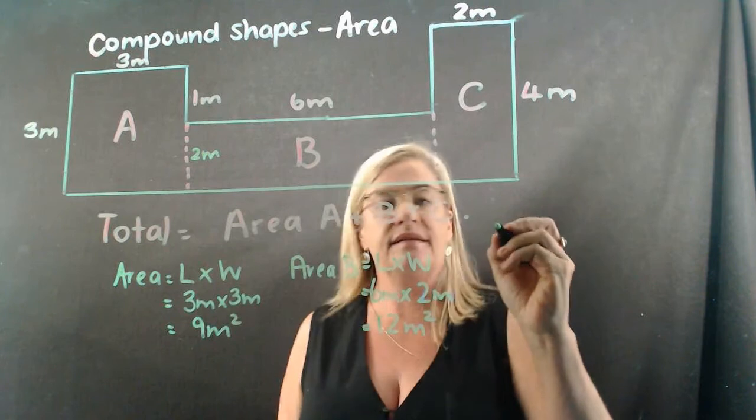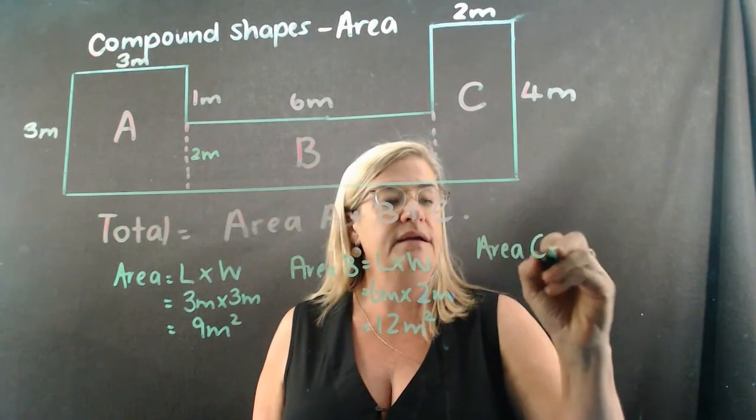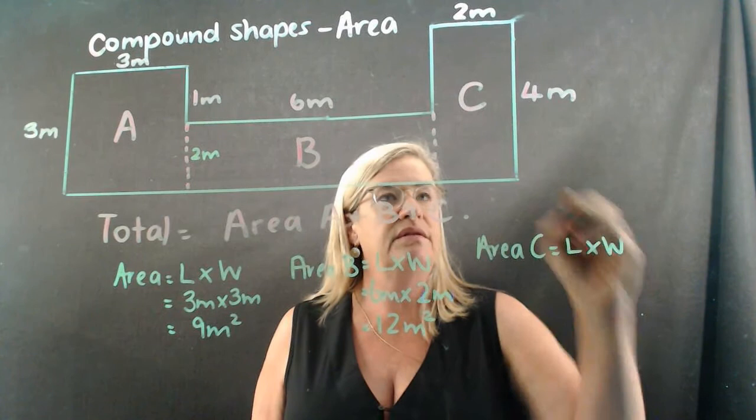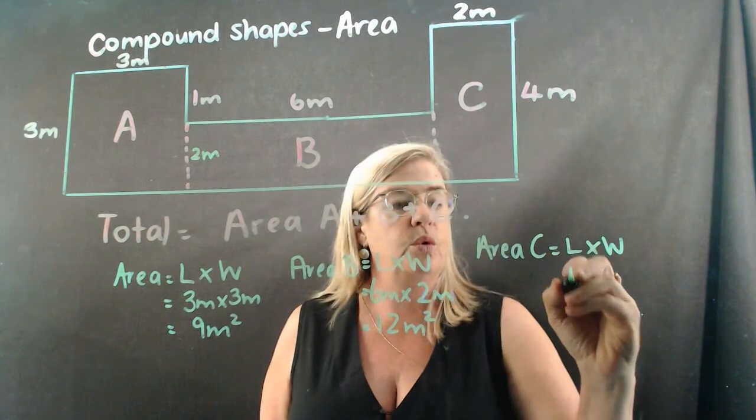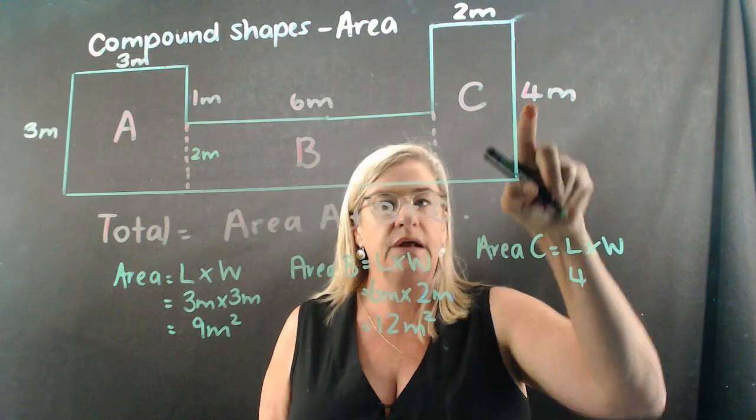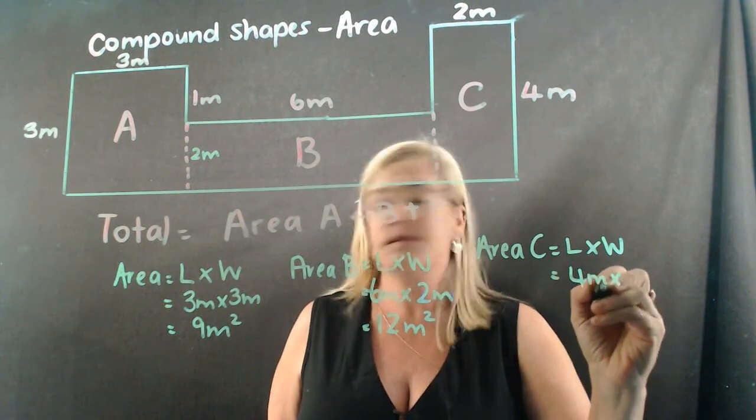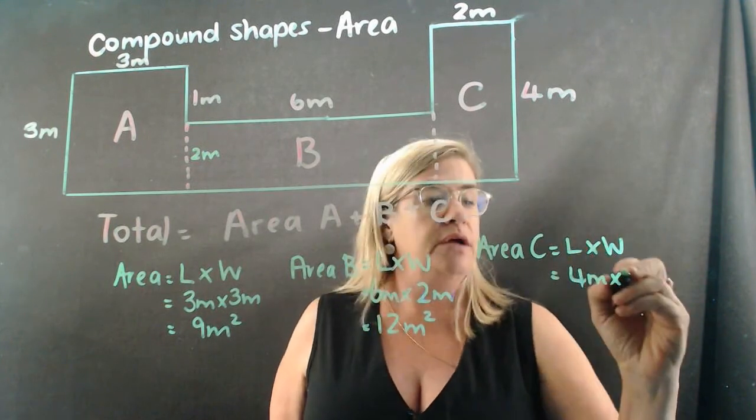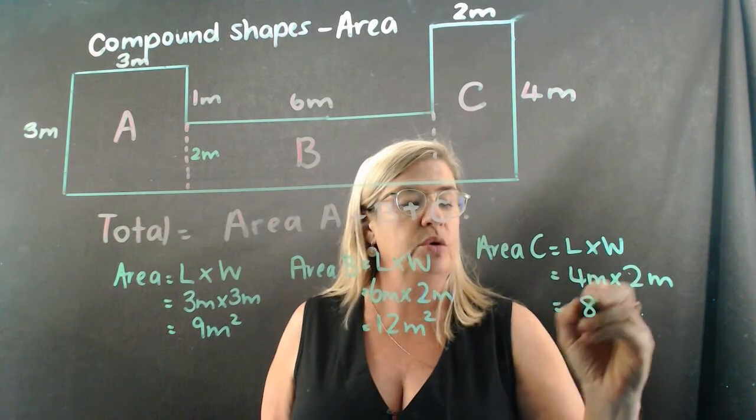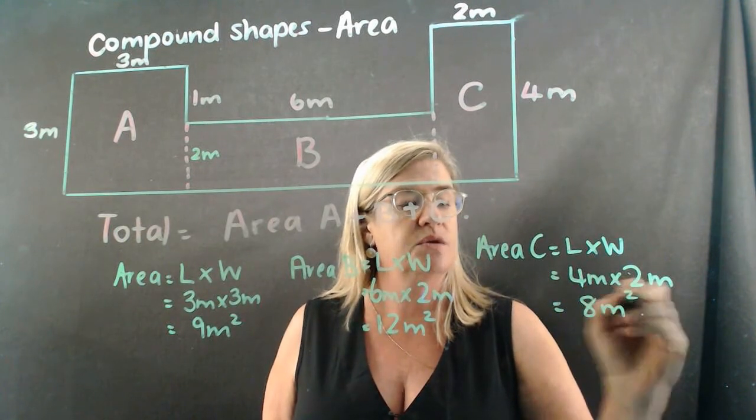And the last one, area C equals length times width. The length is four meters. Always put the value of the length underneath the L. Four meters multiplied by two meters. And the answer, of course, is eight meters squared.